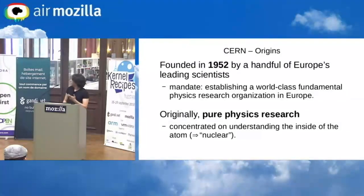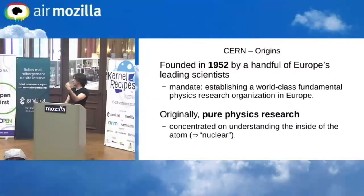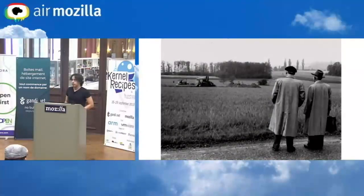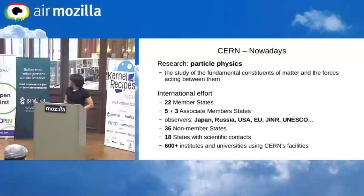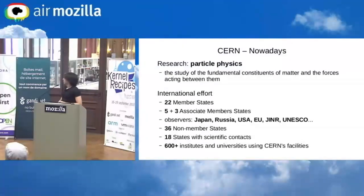CERN was founded more than 60 years ago, originally to discover what was inside the atom. This is the founding council meeting, and this is the first dig at the site. Nowadays it's particle physics — maybe tomorrow they'll change the name again. It's an international effort: 22 member states right now, with three more likely to join soon.